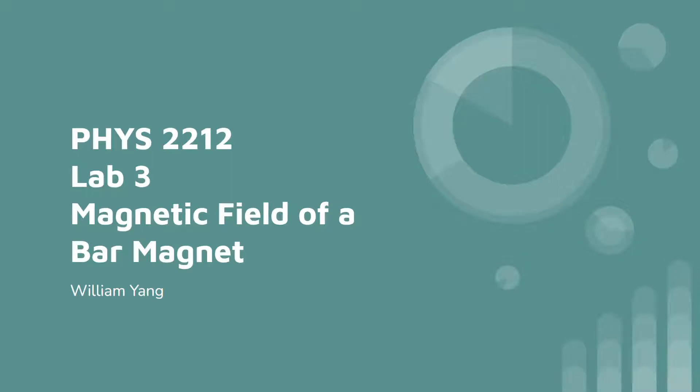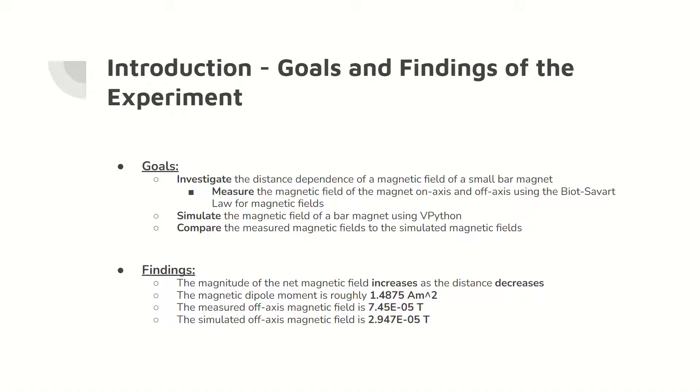Welcome to Physics 2212 Lab 3, Magnetic Field of a Bar Magnet. In this investigation, the dependence of distance for magnetic fields of a small bar magnet was investigated by measuring the on-axis and off-axis magnetic fields using the Biot-Savart law.